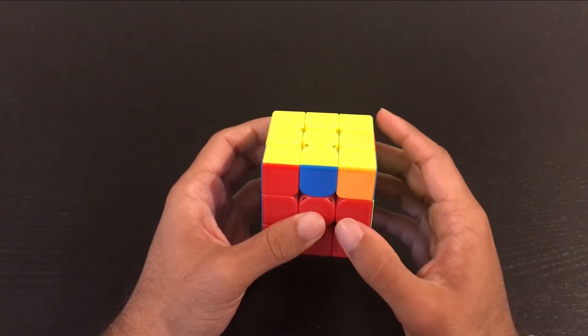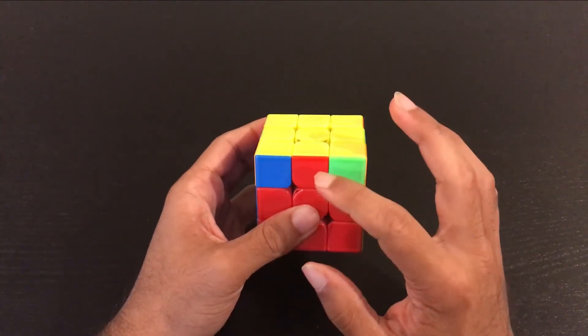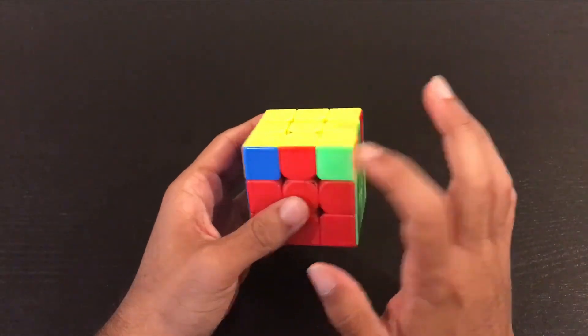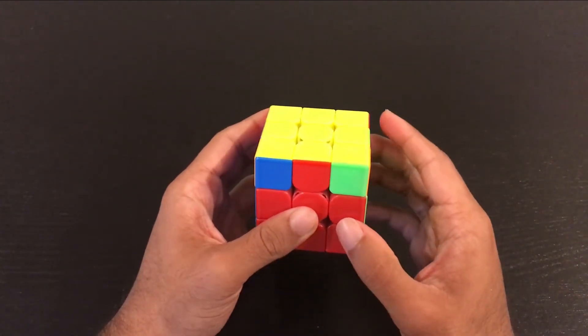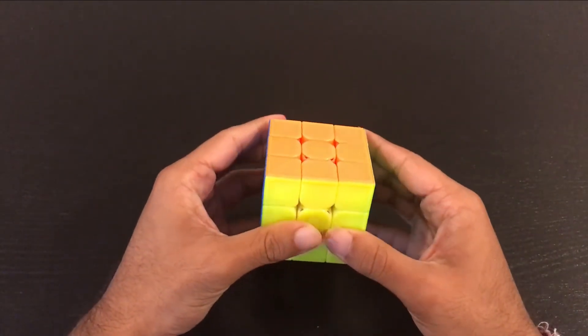If they're not then you simply just have to do a U or a U' and that will get you to the right position where the center edge and this sticker right here are opposite colors. And then you can just execute the ALC just like that.